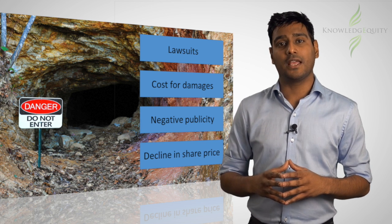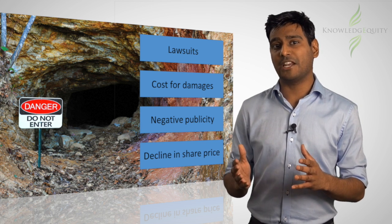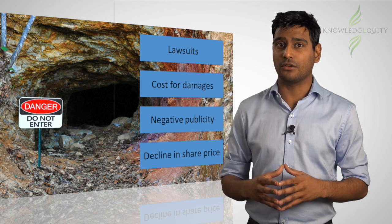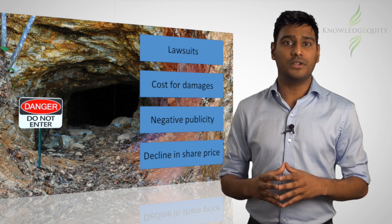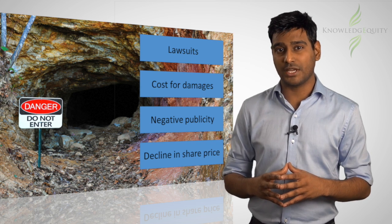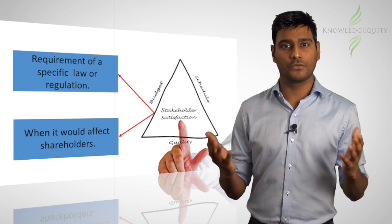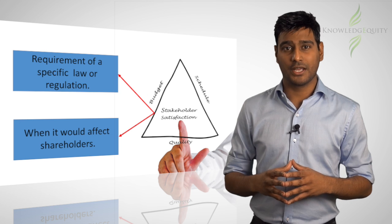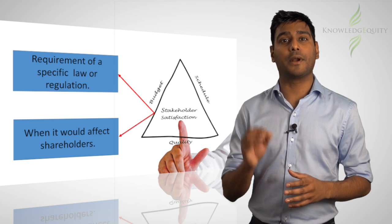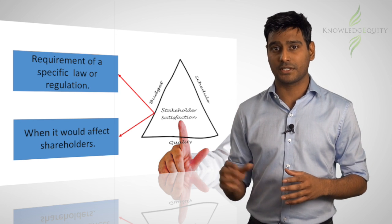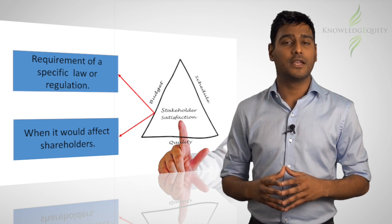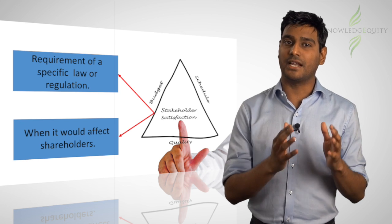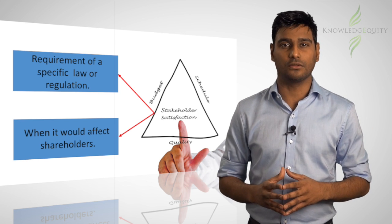Accordingly, in this instance, failure by management to focus on the derivative duties of other stakeholders would result in negative consequences for shareholders. To recap, under the Anglo-American approach, companies are run primarily for the benefit of shareholders. However, there are two instances where management would have a direct duty to other stakeholders.